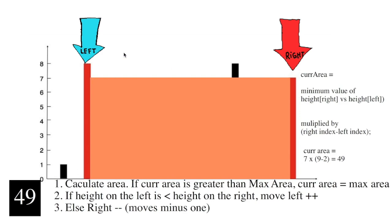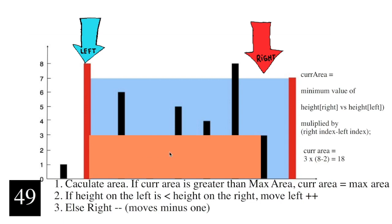Now, left is at 8 and right is at 7, so we're going to be moving our right to the left. The orange area is depicting the area we're calculating. The minimum value of the height on the right and the left is 3. We take the right index minus the left index: 3 times 6 is 18. 18 is not greater than 49, so we keep our max area the same. The height on the left is greater than the height on the right, so we move our right minus one.